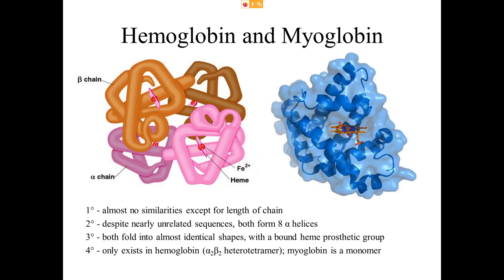Let's look at hemoglobin and myoglobin. Hemoglobin is one of the transport proteins and myoglobin is one of the storage proteins, and both transport or store molecular oxygen. The oxygen is held using an iron atom held by a heme group — a tetraporphyrin ring — where the iron binds the O2. Hemoglobin has four different subunits, so it has quaternary structure, whereas myoglobin is a single subunit — a monomer — with no quaternary structure.